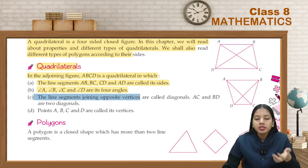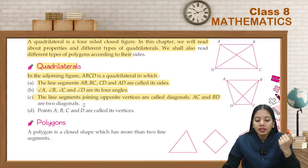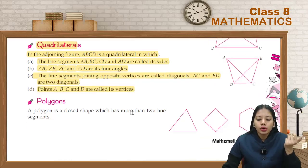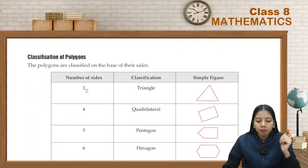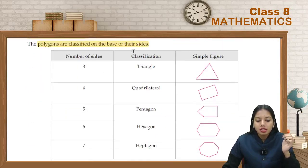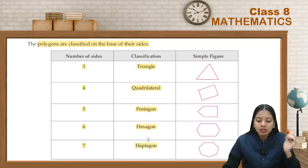Diagonals are line segments joining opposite vertices — for example, A and C joined, or B and D joined. The vertices are points A, B, C, D. A polygon is a closed shape made of line segments. Classification of polygons by sides: three sides is a triangle, four sides is a quadrilateral, five sides is a pentagon, six sides is a hexagon, and seven sides is a heptagon.